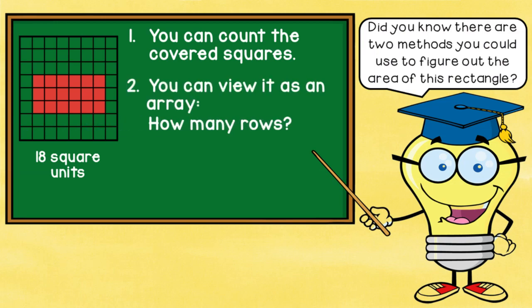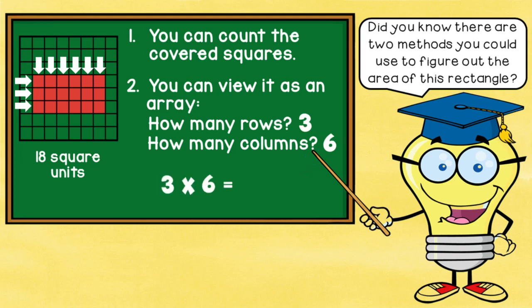But there's another way. You can view it as an array. The first thing you would do is you would figure out how many rows are going across, and you can see that there are three of them. And then you would figure out how many columns are going down, and you would see that there are six of those. So a multiplication array would be three times six, and three times six equals that same answer of 18 square units.